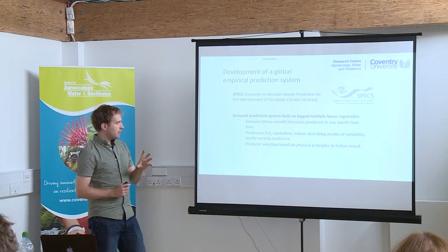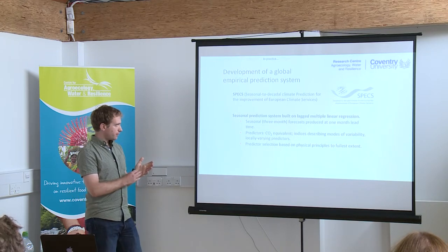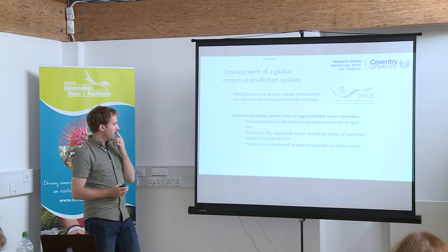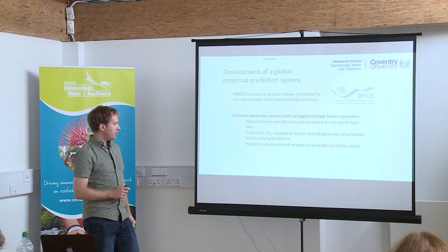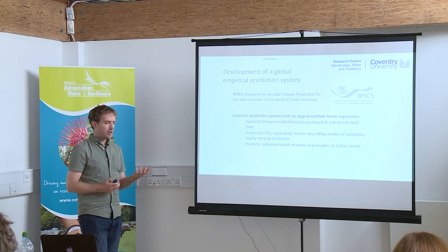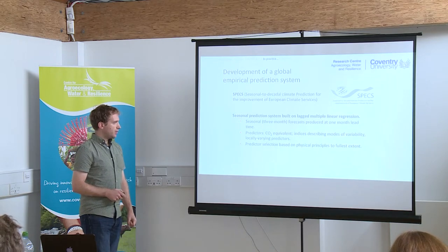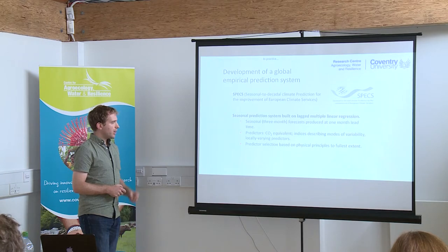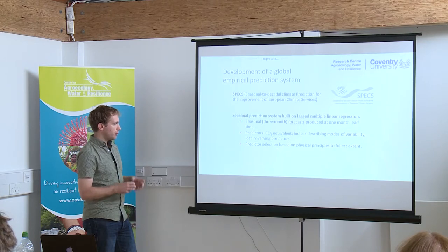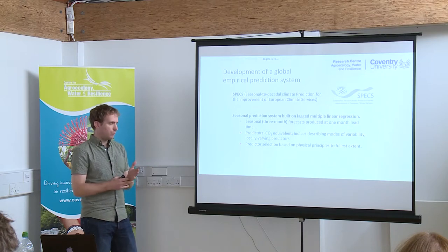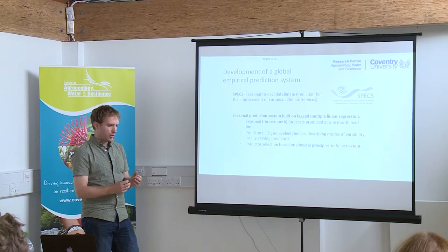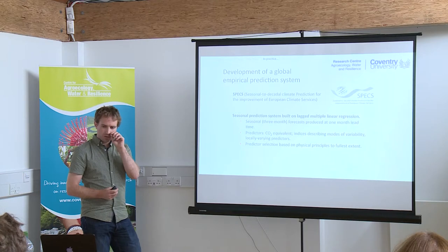In comparison to some of the empirical methods I've mentioned, the statistical model behind this system is actually quite simple — it's based on multiple linear regression with a number of different predictors: CO2 equivalent as an annual representation of greenhouse gases in the atmosphere, modes of variability as I've described, and also locally varying predictors. While it's a fairly simple statistical model, the selection of predictors is very much based on physical principles, relying on our understanding of the climate system rather than just throwing in as many predictors as possible — really trying to avoid model overfitting.